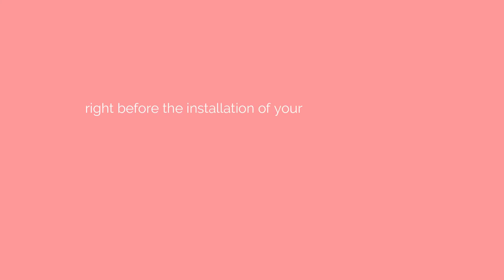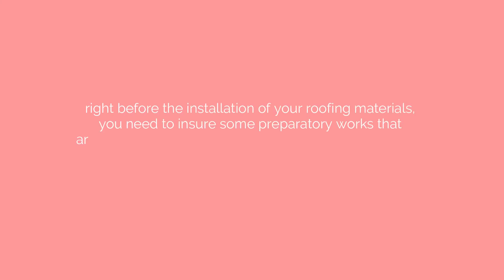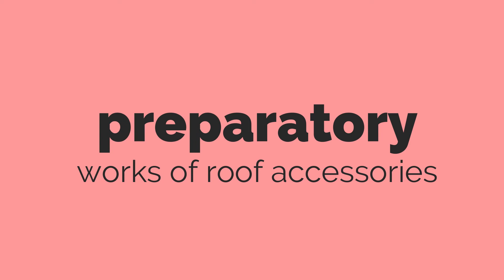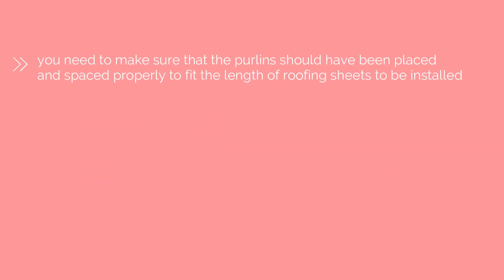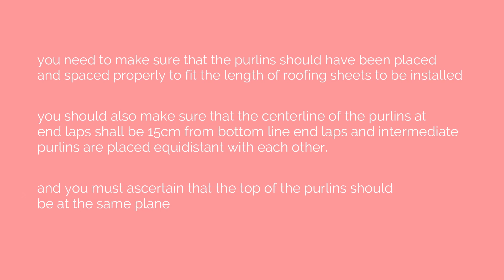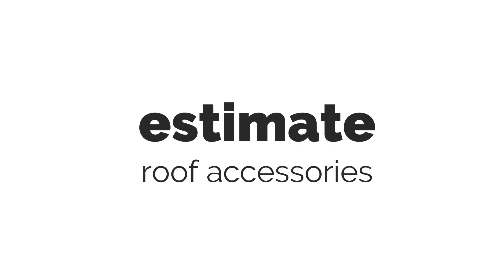Right before the installation of your roofing materials, you need to ensure some preparatory works. Purlins shall be placed and spaced properly to fit the length of the roofing materials. The center end of the purlins at end laps shall be 15 centimeters from the bottom line; end laps and intermediate purlins are placed equidistant with each other; and the top of the purlins should be at the same plane.